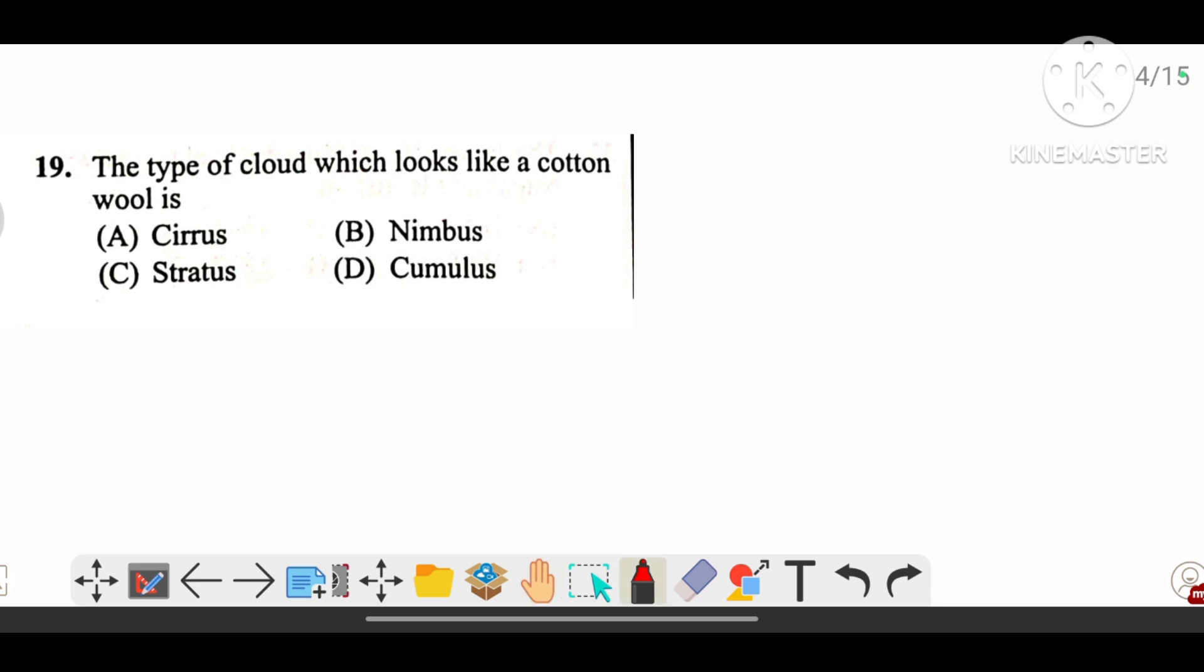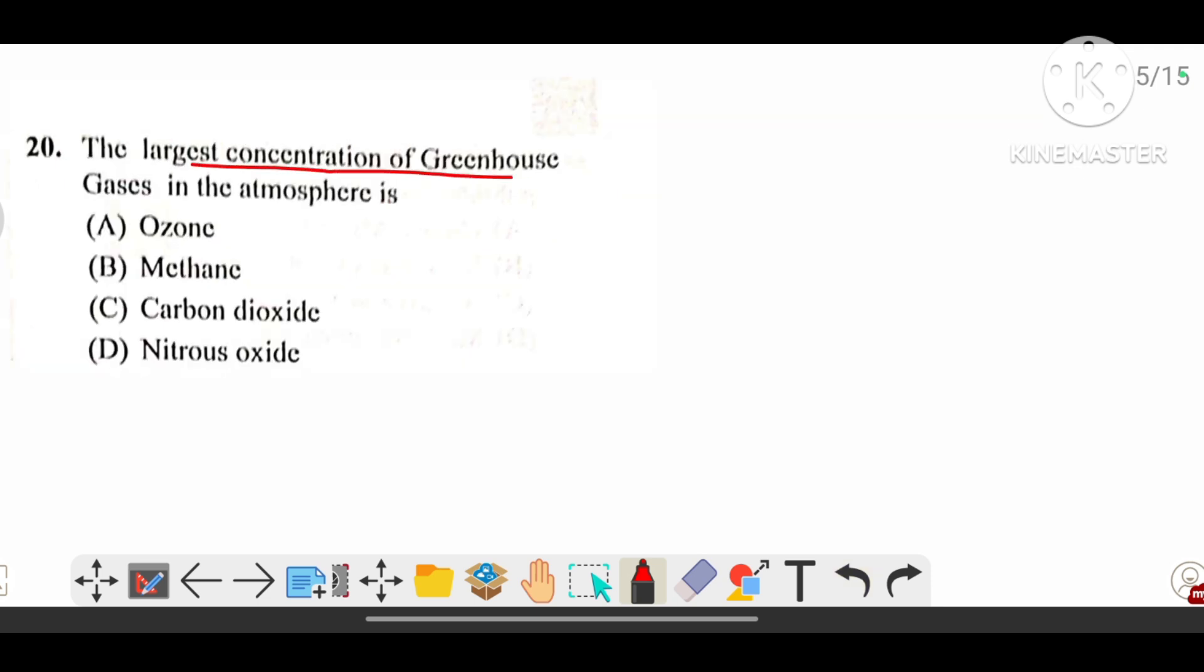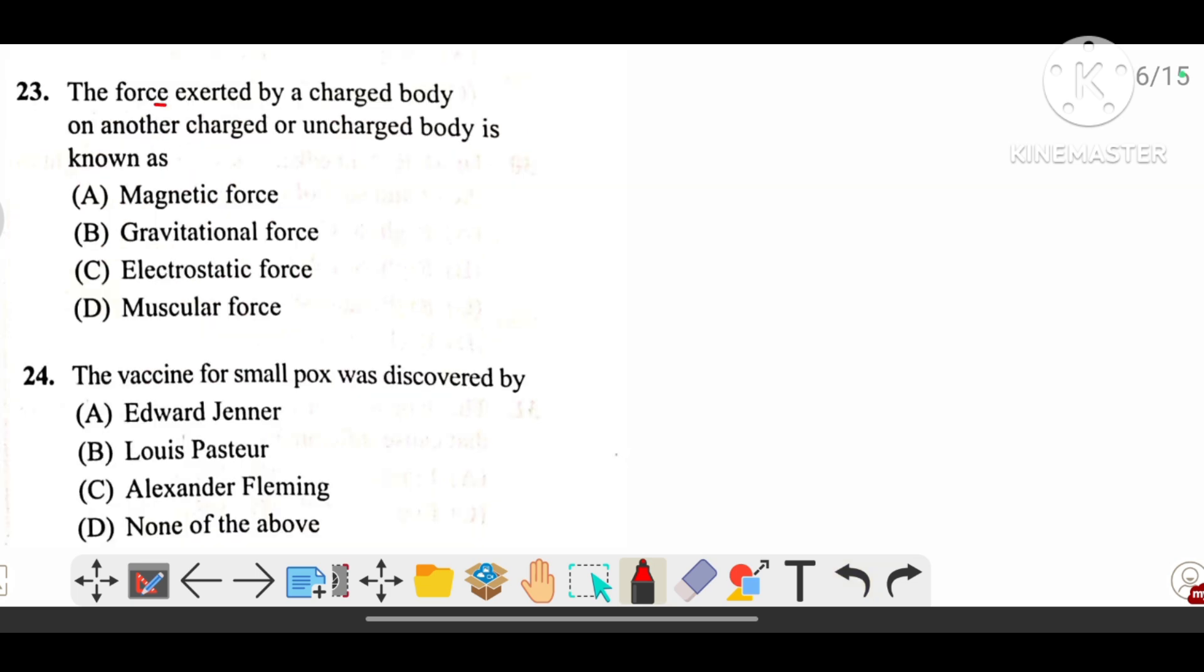The type of clouds which looks like cotton wool, the answer is D, that is cumulus. The largest concentration of greenhouse gases in the atmosphere is C, that is carbon dioxide, CO2.